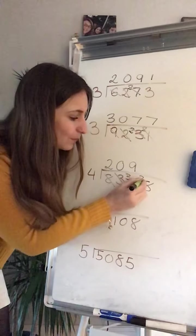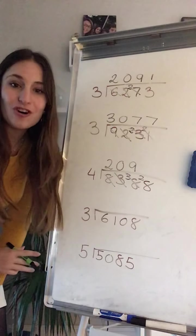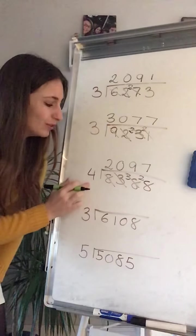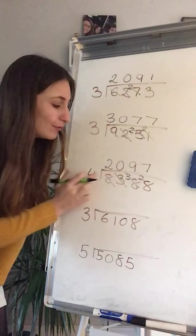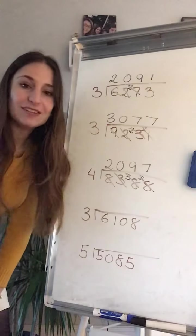28 is on my 4 timetable, 7 times 4 is 28.